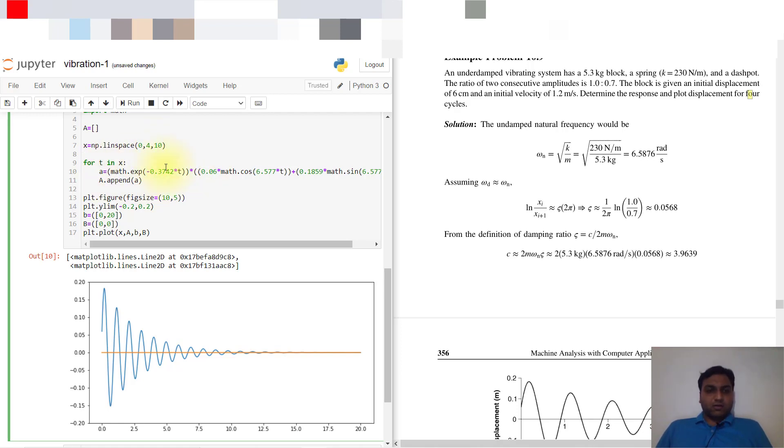It will calculate the value of a, and the value of a will be input as a append. If I put 0, the value of a will be input in this array. Then at 0.4, it evaluates the function a and inputs this value in the array.